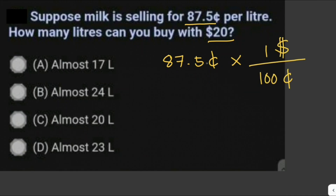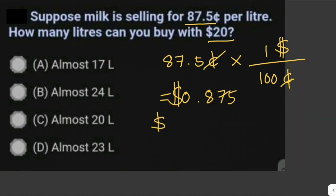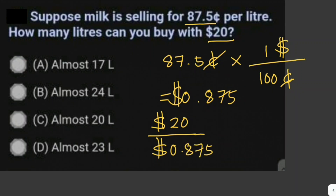This cancels out, so 87.5 cents is just equal to 0.875 dollars. Now let's divide 20 dollars by 0.875. You can do this using long division.